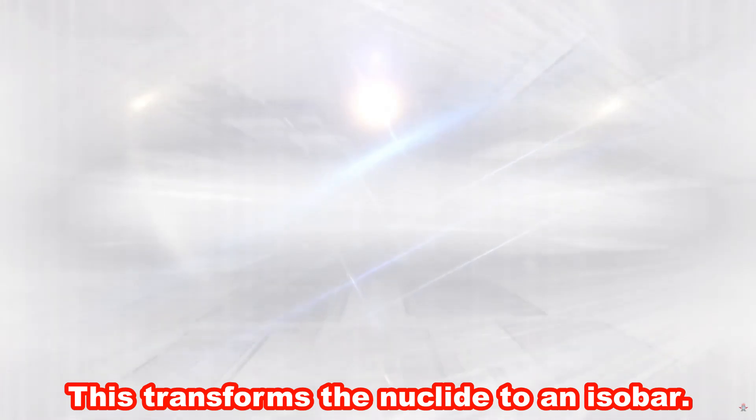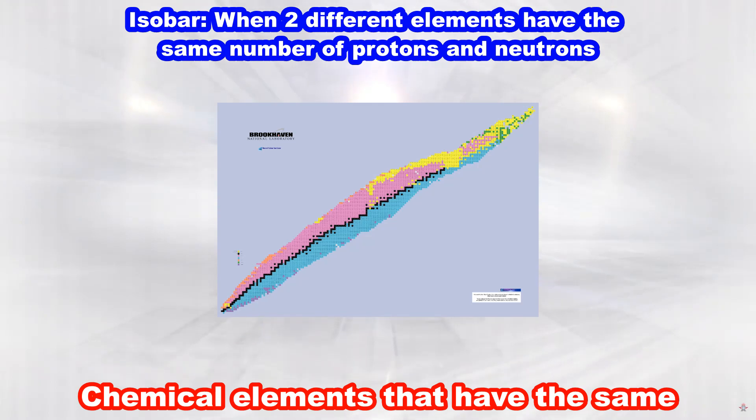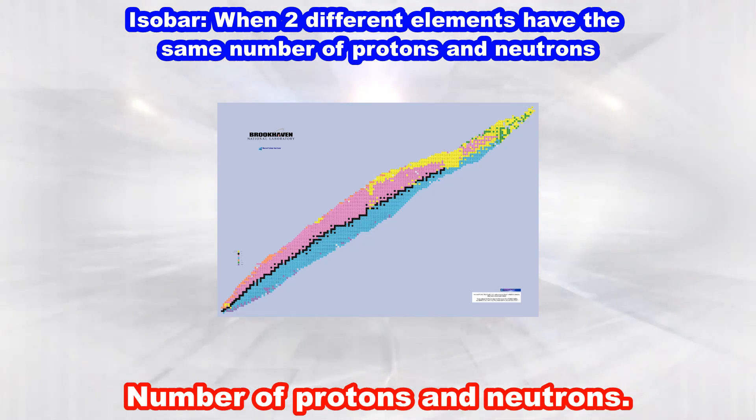This transforms the nuclide to an isobar. Isobars are atoms of different chemical elements that have the same number of protons and neutrons.